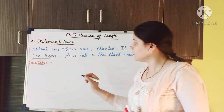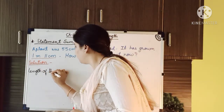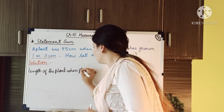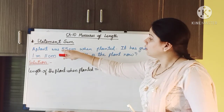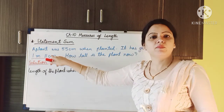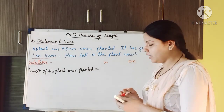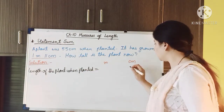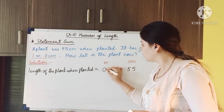So the first statement we have to write is: length of the plant when planted is equal to — now here we can see the length was only 55 centimeter. But in the second number, meter and centimeter both units are there, so we have to make two columns: meter and centimeter. When it was planted it was only 55 centimeter long, so in the centimeter column we write 55 and in the meter column we write 0.